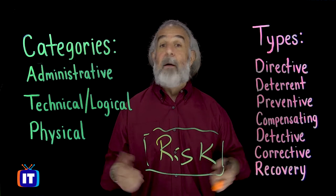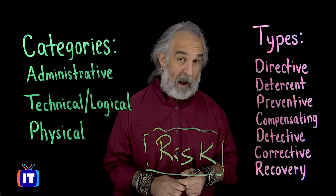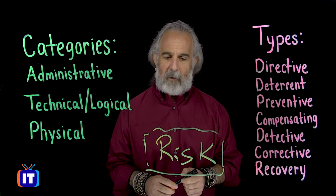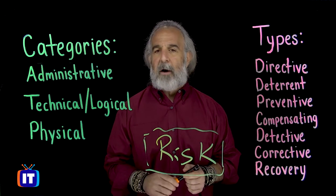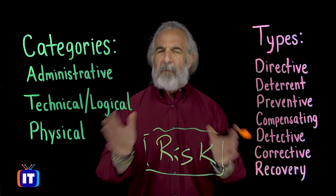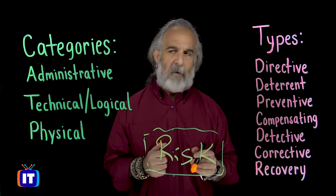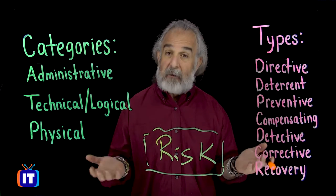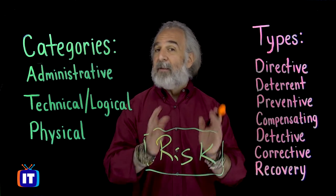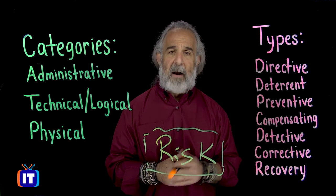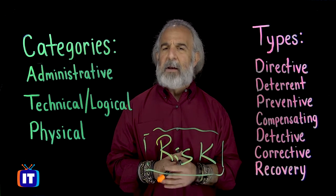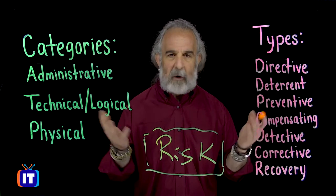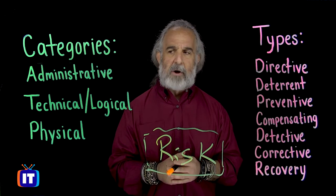We have categories on the lightboard, and categories group together controls at a high level. They may be administrative in nature — policy-based, giving us guidance about how things should be done, aligning with business requirements, regulatory and statutory concerns, things of that nature.